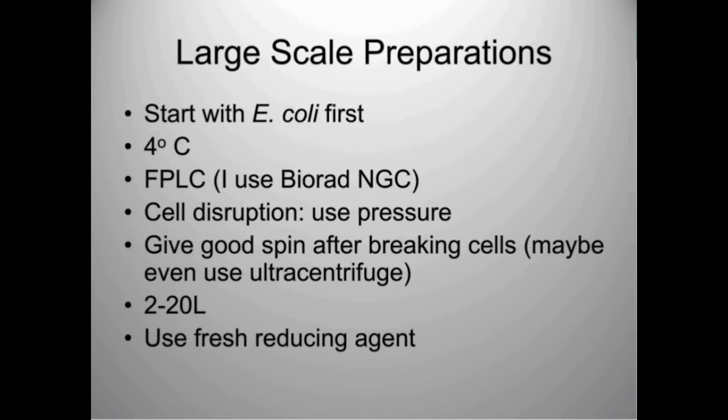Use fresh reducing agents. Reducing agents like DTT and beta-mercaptoethanol go bad quickly—anecdotally about three days at room temperature. If your protein has cysteines, you probably need a reducing agent, and you should keep it fresh at each step as you dialyze or prepare your buffers.